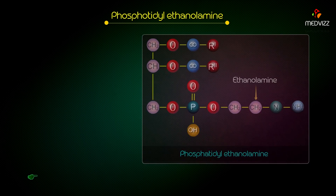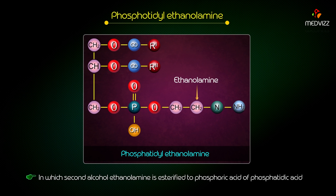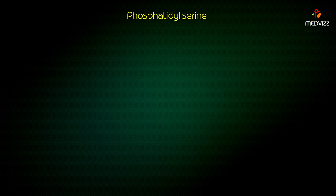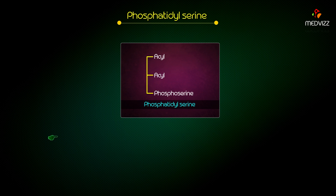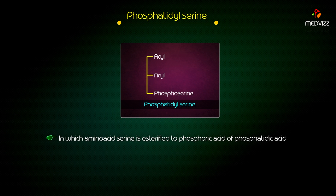Phosphatidylethanolamine: here, the second alcohol, ethanolamine, is esterified to phosphoric acid, a phosphatidic acid. Phosphatidylserine: here, the amino acid serine is esterified to phosphoric acid, a phosphatidic acid.